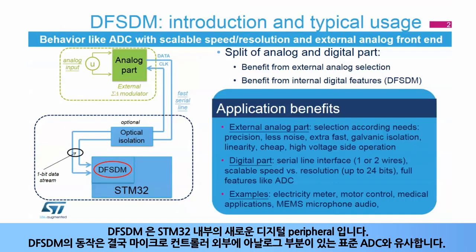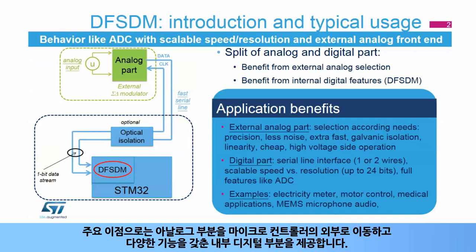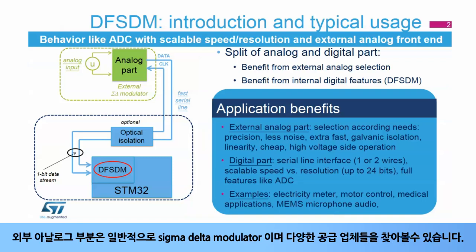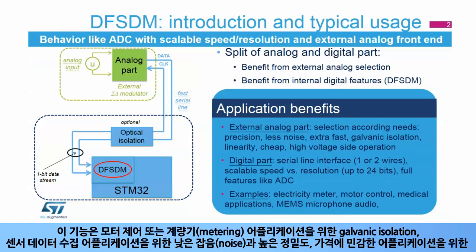The DF-SDM peripheral is a new digital peripheral inside STM32 products. Its behavior is like a standard ADC with the analog part outside the microcontroller. The main benefit is to move the analog part outside the microcontroller and to propose an internal digital part with a wide range of features. The DF-SDM represents the digital part, which is connected to the analog part by a fast serial interface. The external analog part is usually a Sigma Delta modulator offered by a wide range of vendors.